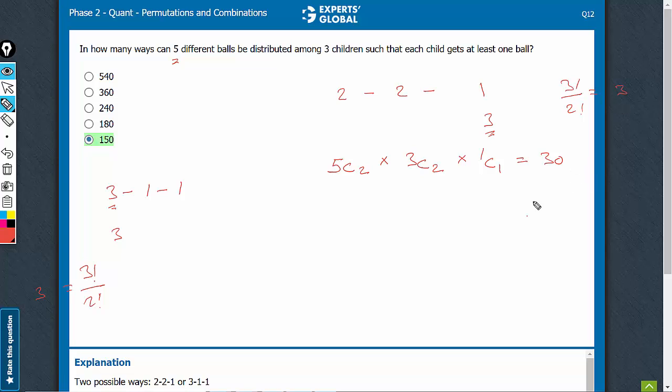And 3 earlier. So, 3 times 30. Total number of ways here, in this case, is 90.